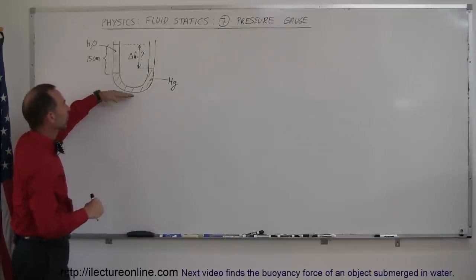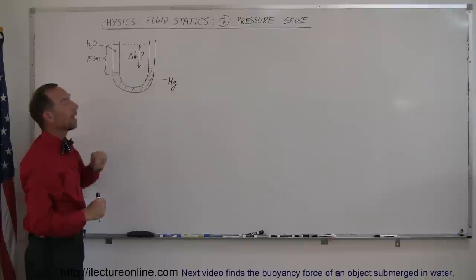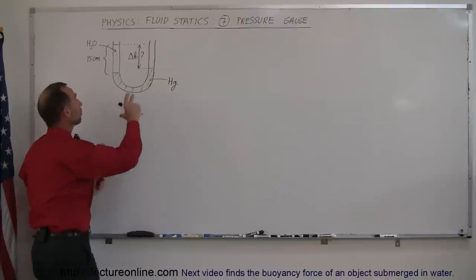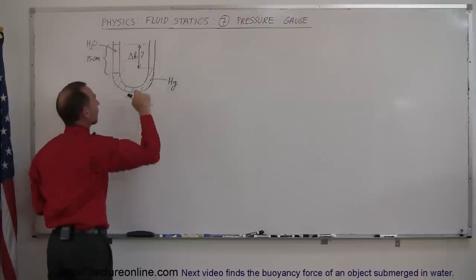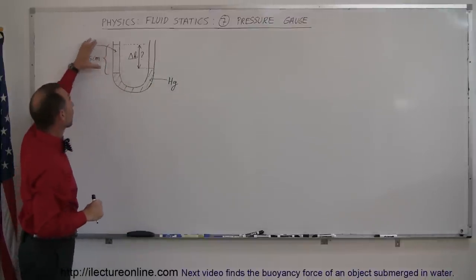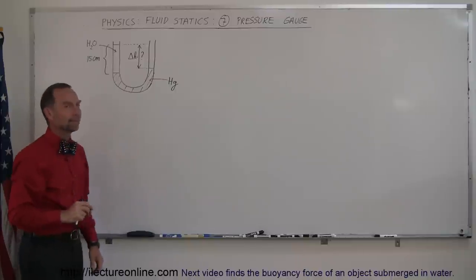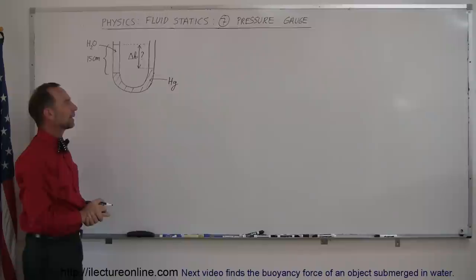And then the question is, what would be the difference in height between the top of the water on one side and the top of the mercury on the other side if the column of water is 15 centimeters high? So how do you do a problem like that?